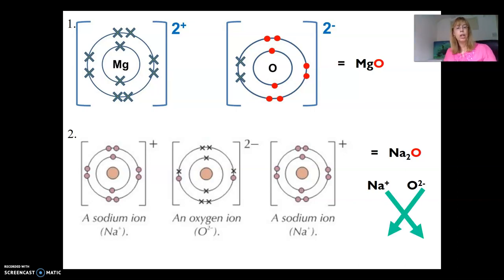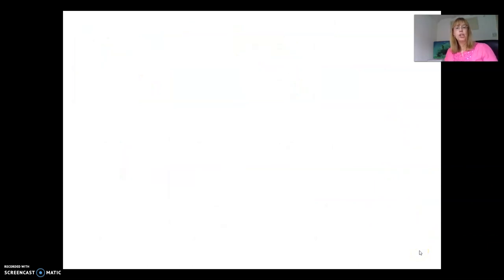The foolproof way is to swap the charges: give the number of the charge to the opposite element. This tells me I need two sodiums for every one oxygen, so the 2 goes to the Na at the bottom and the 1 goes to the oxygen, giving me Na2O. Here are four examples of varying challenge. Stop the video and see if you can jot down the formulas, then check your answers.